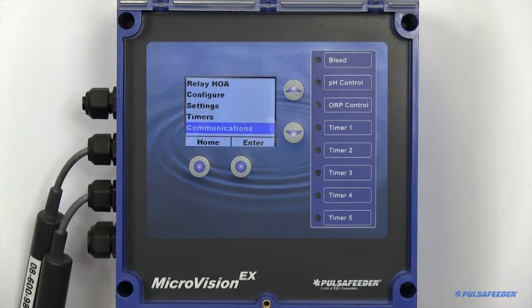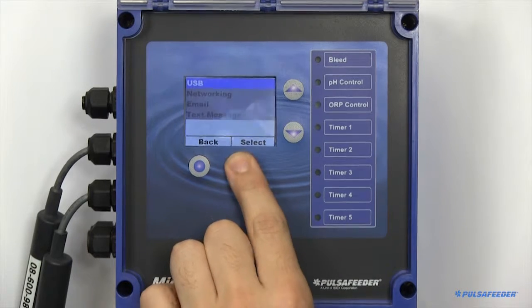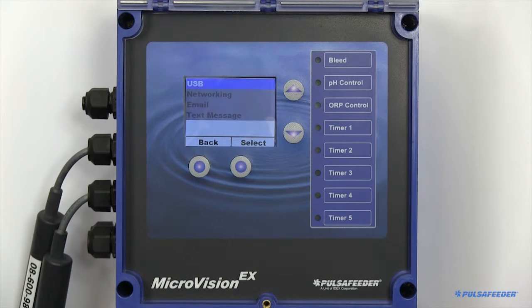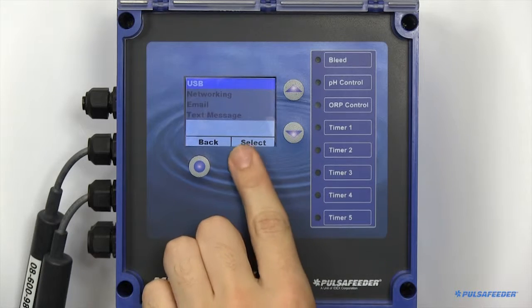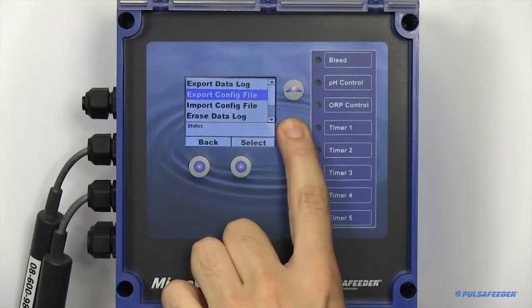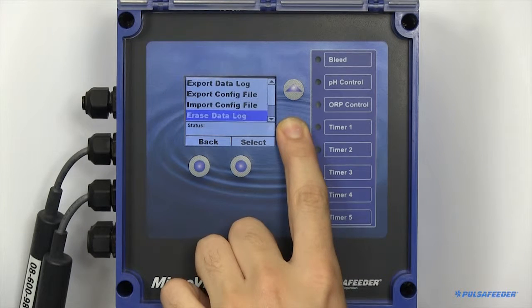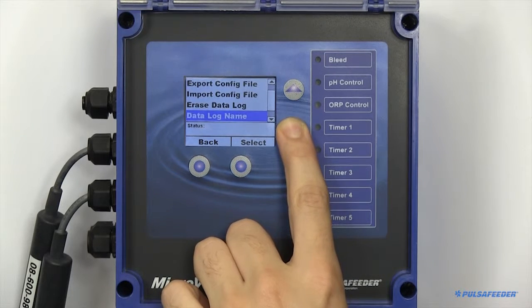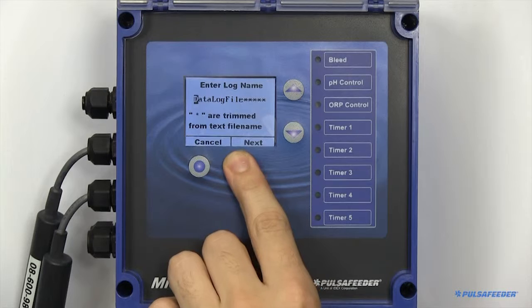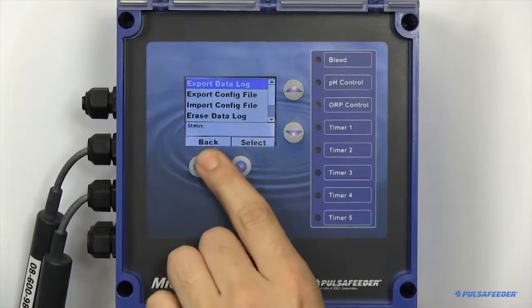The MicroVision EX also features data logging capabilities. These functions are found in the Communications page. The USB function features exporting data logs, exporting config files, importing config files. You can also erase your data log, rename the file, and set your logging interval.